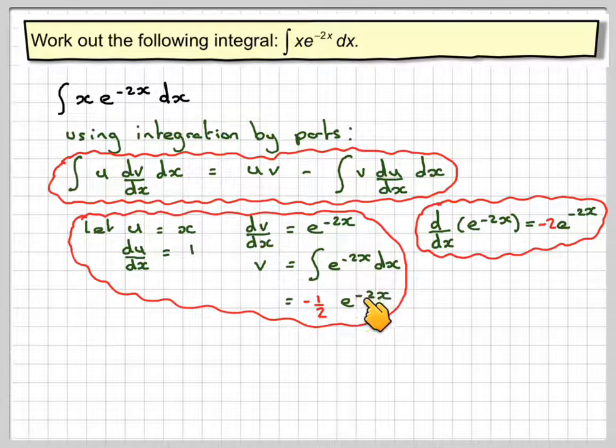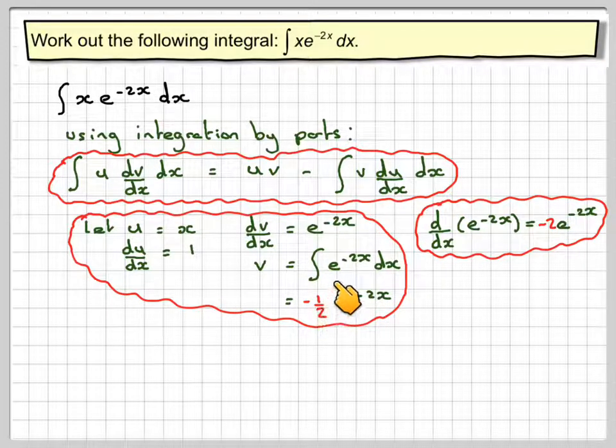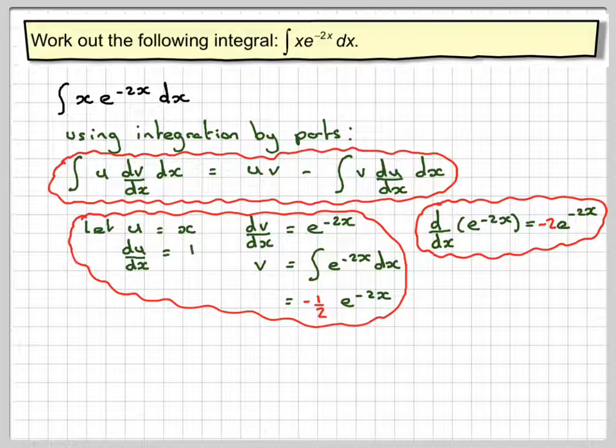Just check: if you differentiate that, you get minus 2 times minus a half, which gives you 1 times e to the minus 2x.